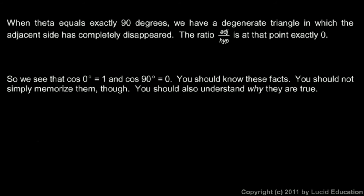When theta equals exactly 90 degrees, we have a degenerate triangle in which the adjacent side has completely disappeared. The ratio adjacent over hypotenuse is at that point exactly 0, so we can write that the cosine of 90 degrees equals 0. So we see that the cosine of 0 degrees is 1 and the cosine of 90 degrees is 0.